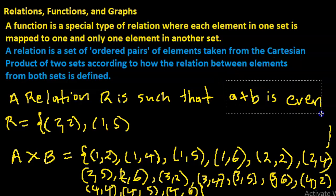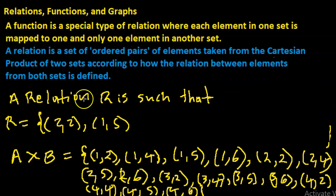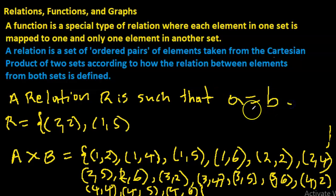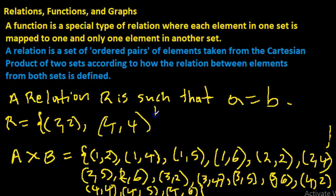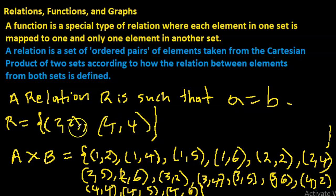Continuing with a plus b is even: we'd have two-two, two-four, two-six, three-five, four-two, four-four, four-six — all pairs where the summation of the two values gives an even number. I could also change R and say R is such that a equals b, and the pairs would be where the a value equals the b value: two-two and four-four.